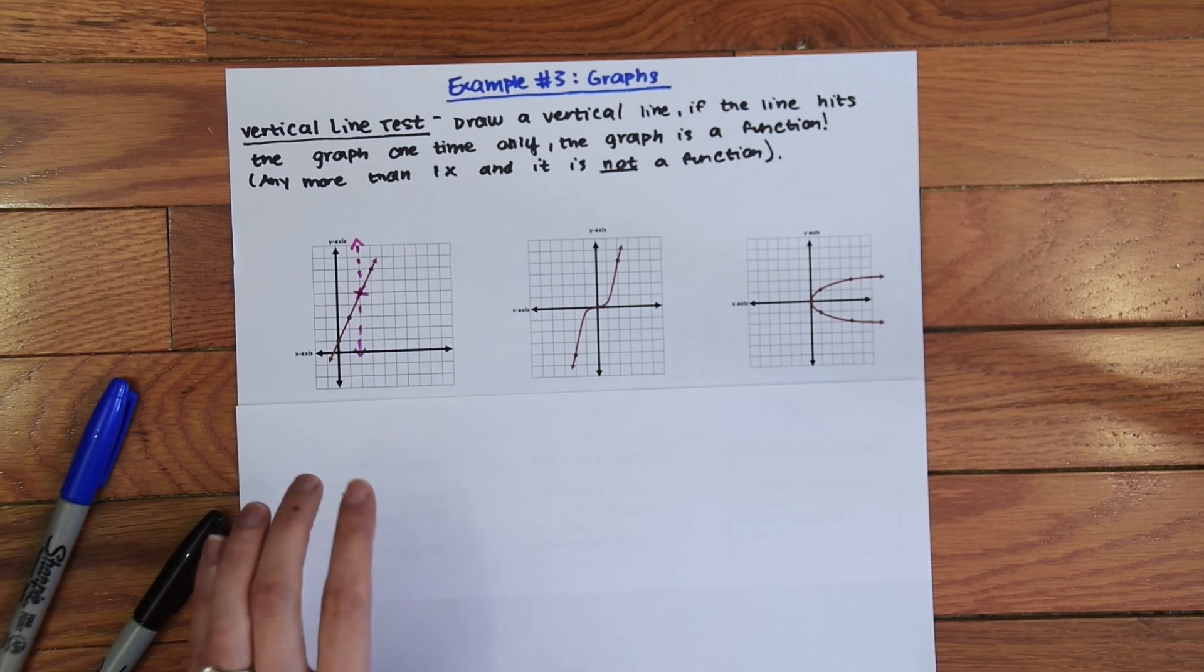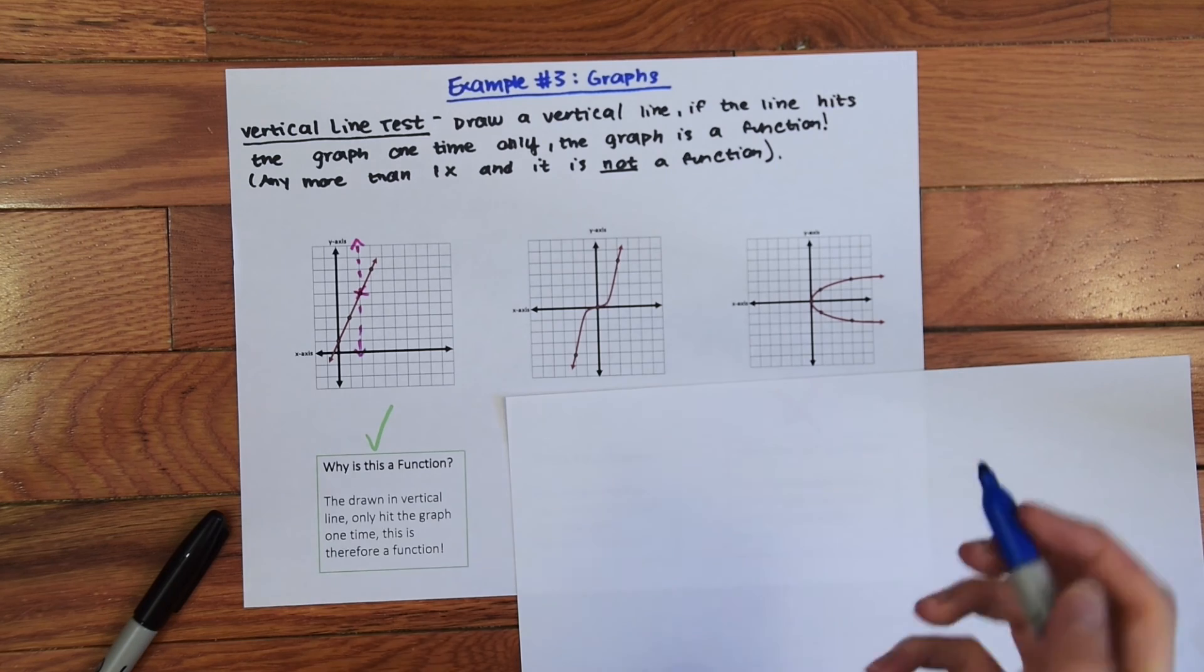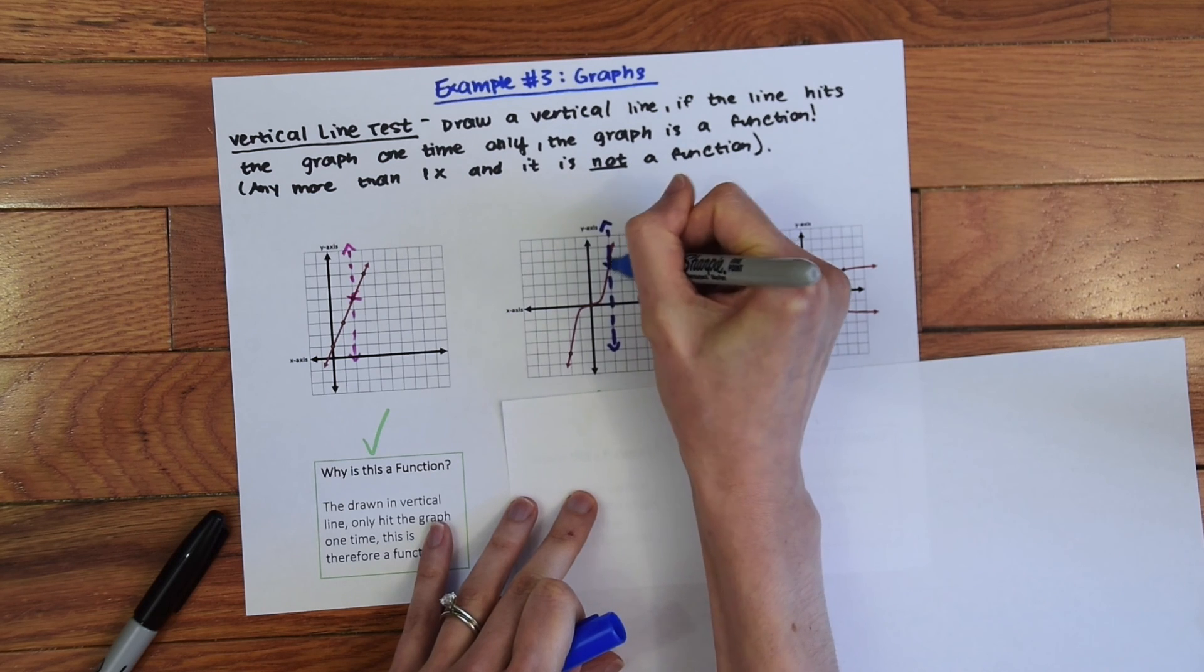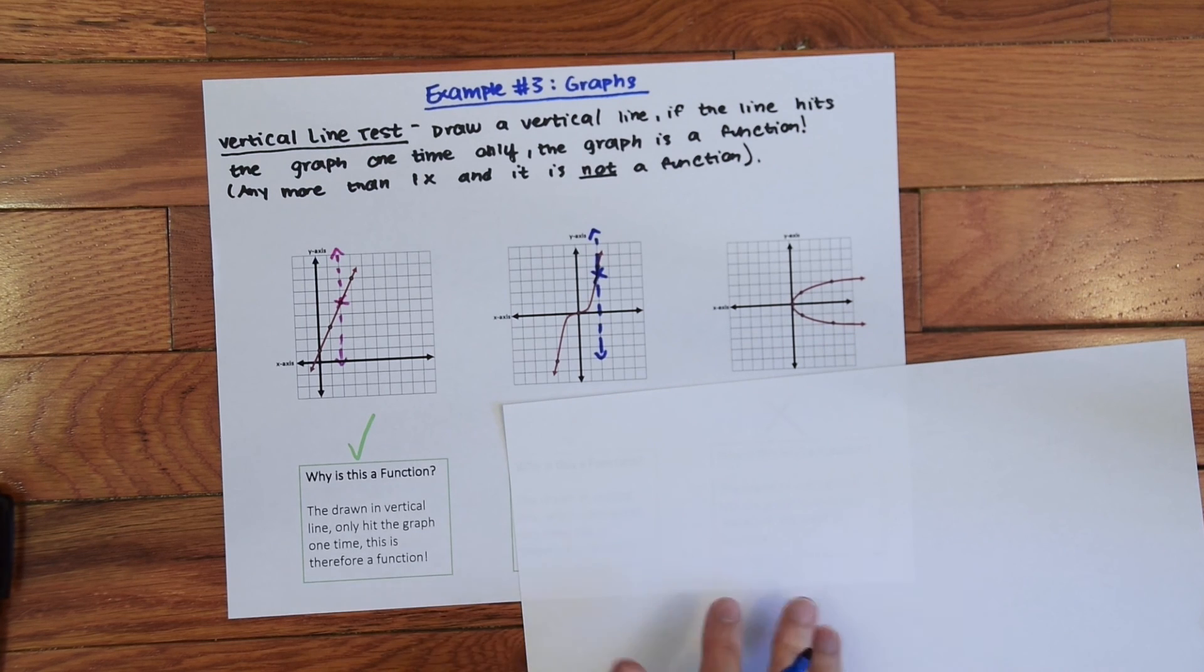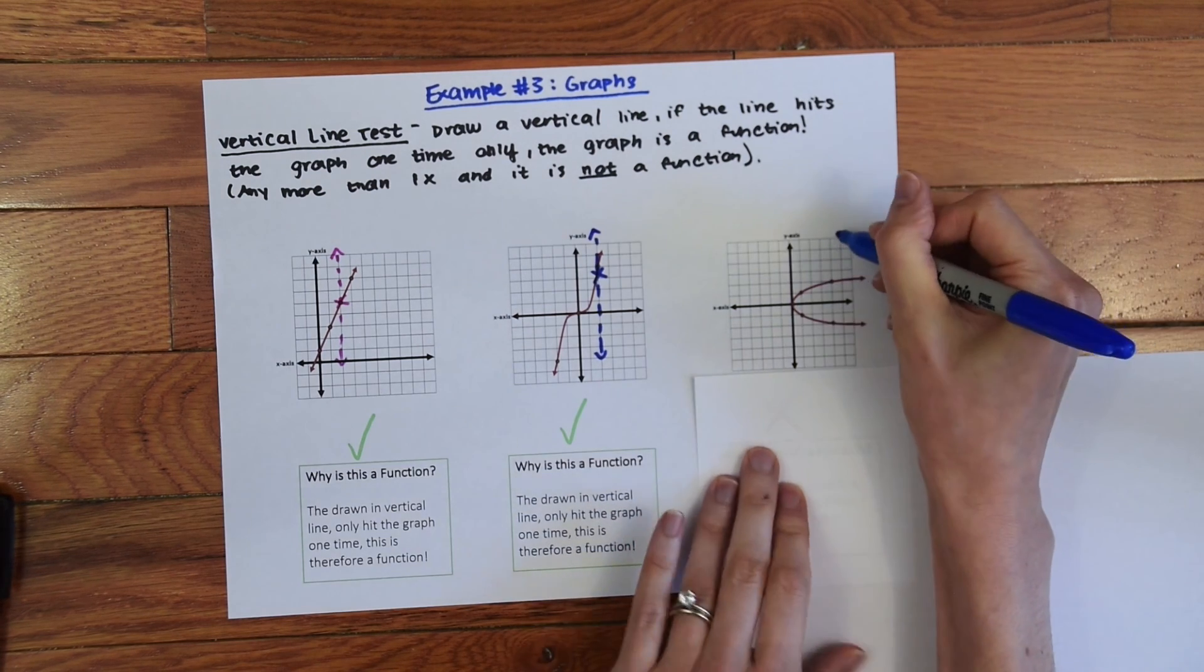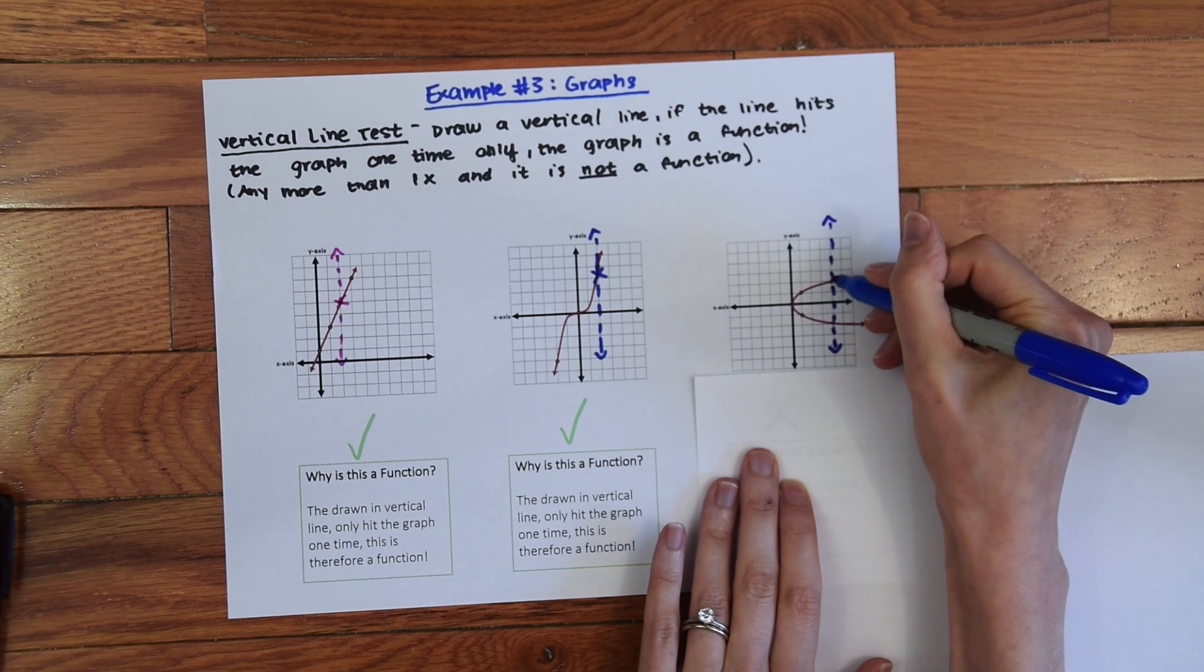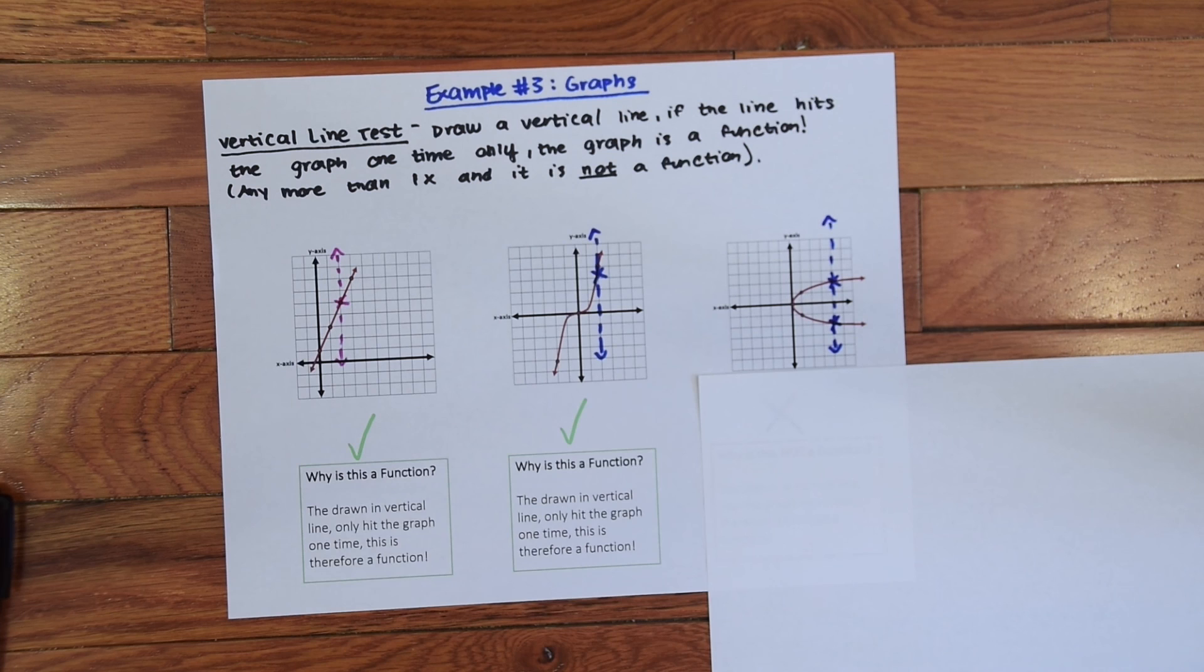We're going to do this with each graph. So let's try it again, our vertical line test, it'll hit that graph one time, so this too is a function. And lastly let's look at our last graph here. Notice this time when we draw a vertical line it hits the graph in two places, so that means this last example here is not a function.